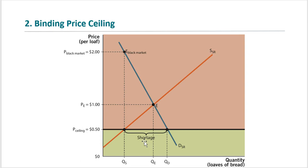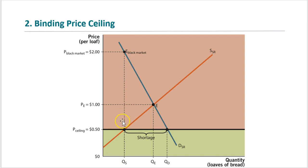When there are shortages, alternative rationing methods are used, such as waiting in line or ration coupons based on need. In an uncontrolled market, price rations the good — with excess demand, price would increase to bring the market back to equilibrium. The black market price is $2. With only QS units available, consumers are willing and able to pay $2 per loaf. This eliminates the shortage, but the price is well above the price ceiling.